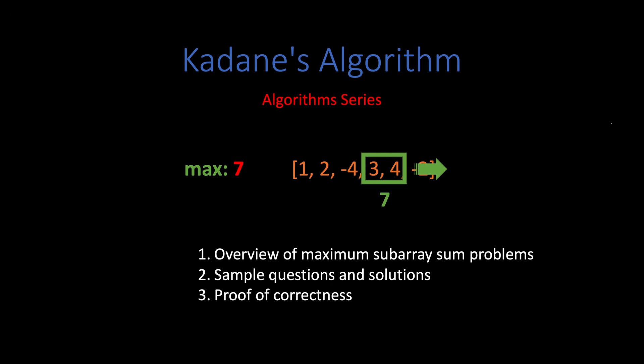The problem at hand is simple. Given an array of integers, find the subarrays with the maximum and minimum possible sums. Kadane's algorithm solves this problem with O(n) time and O(1) space complexity.